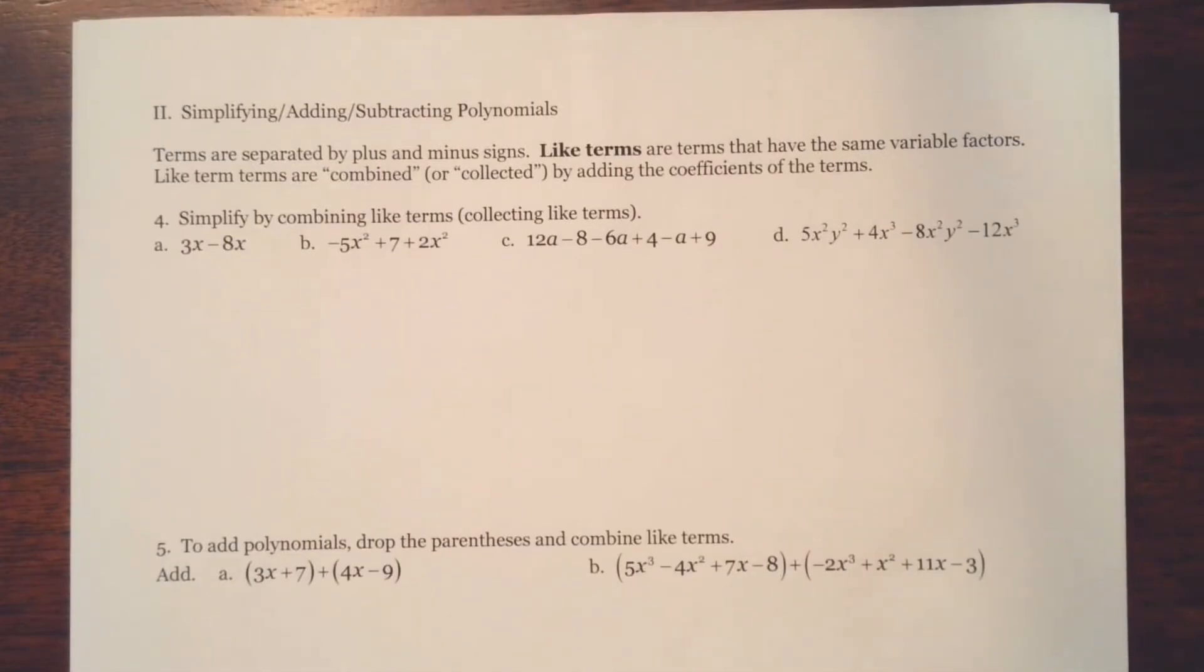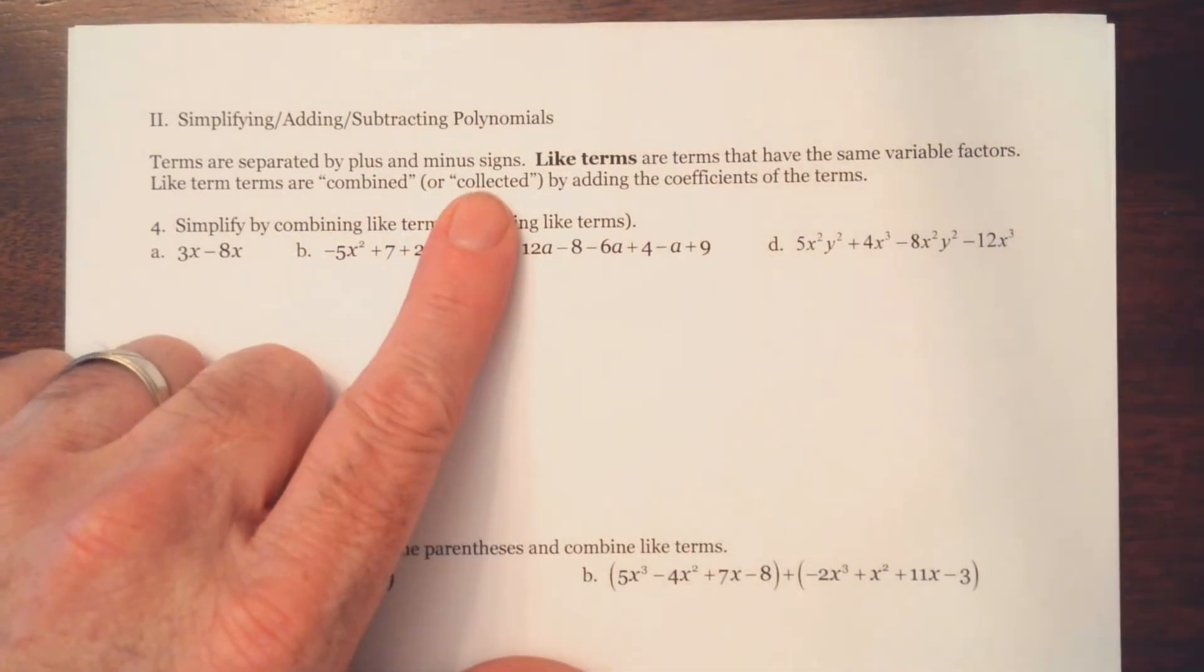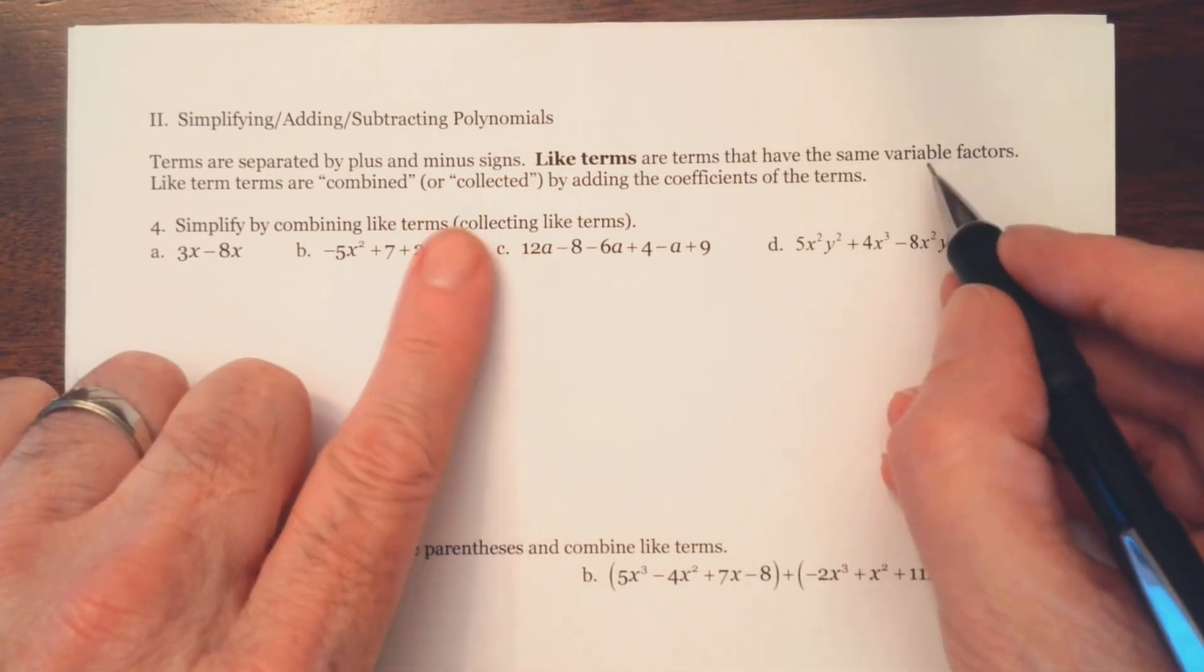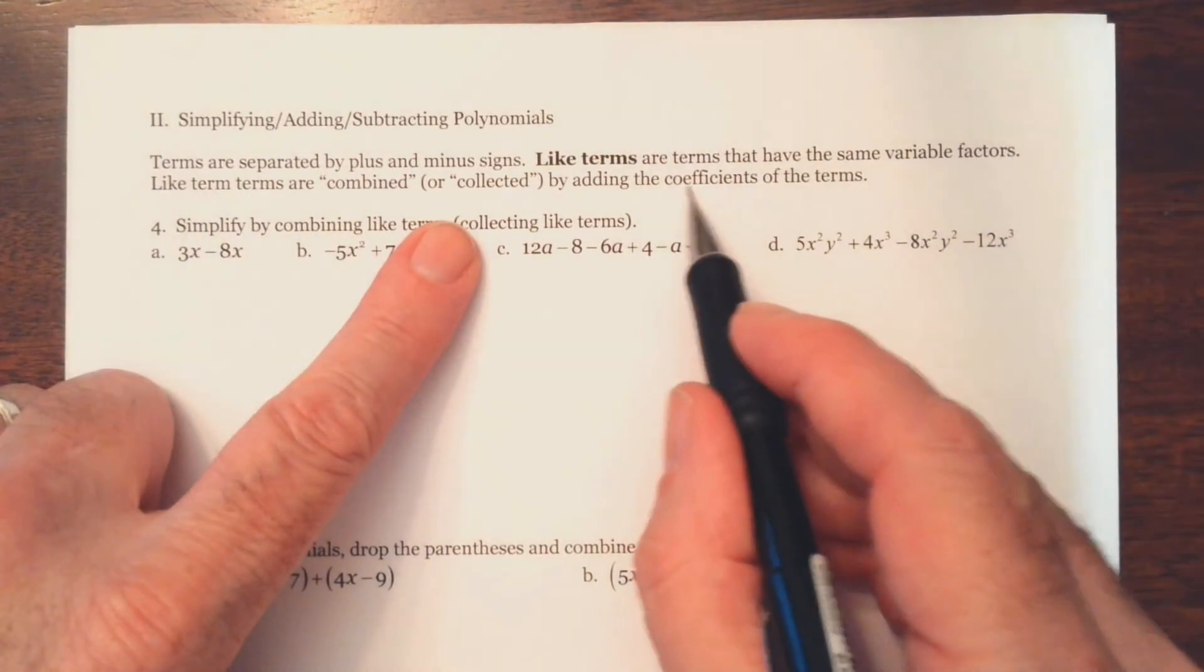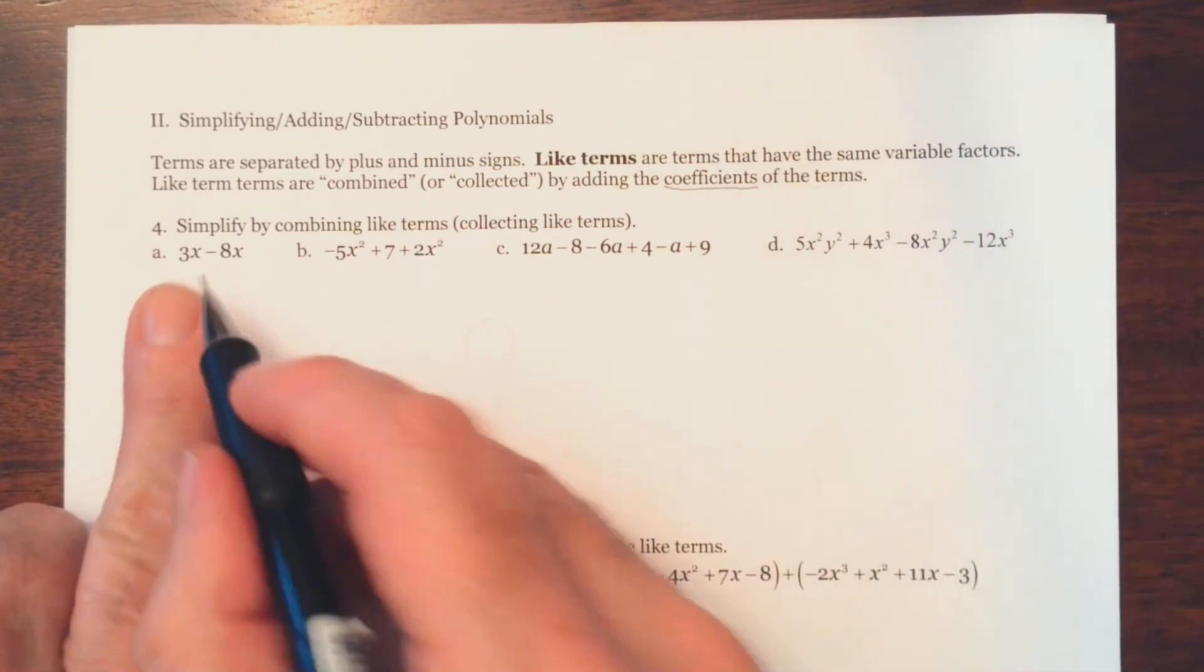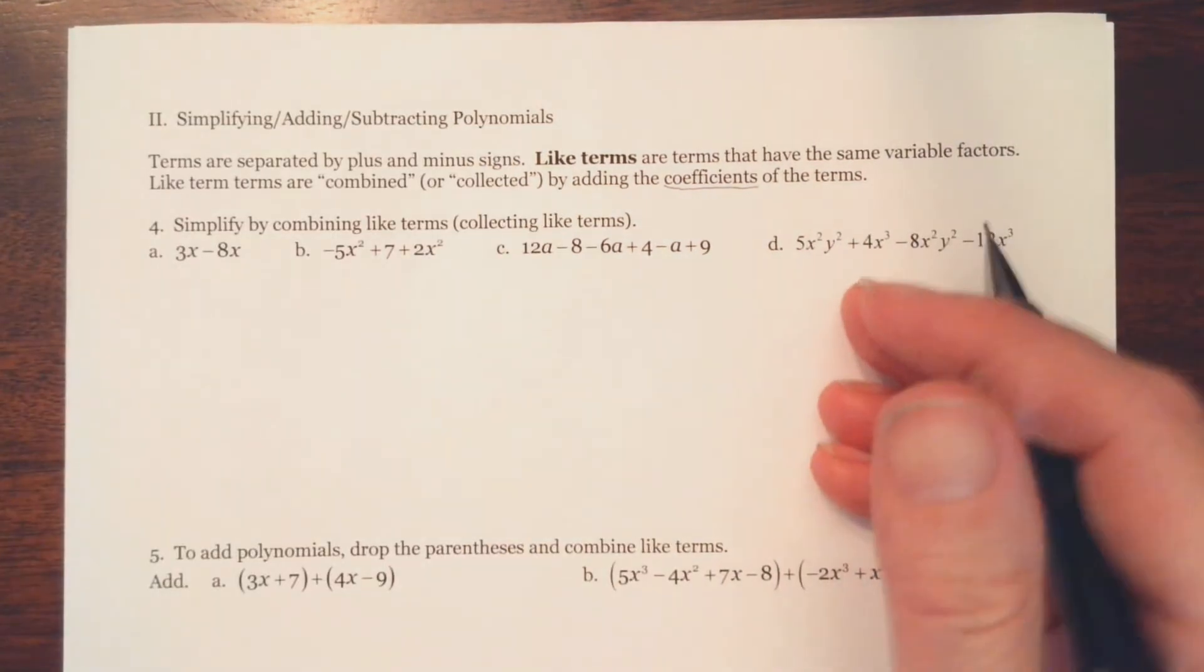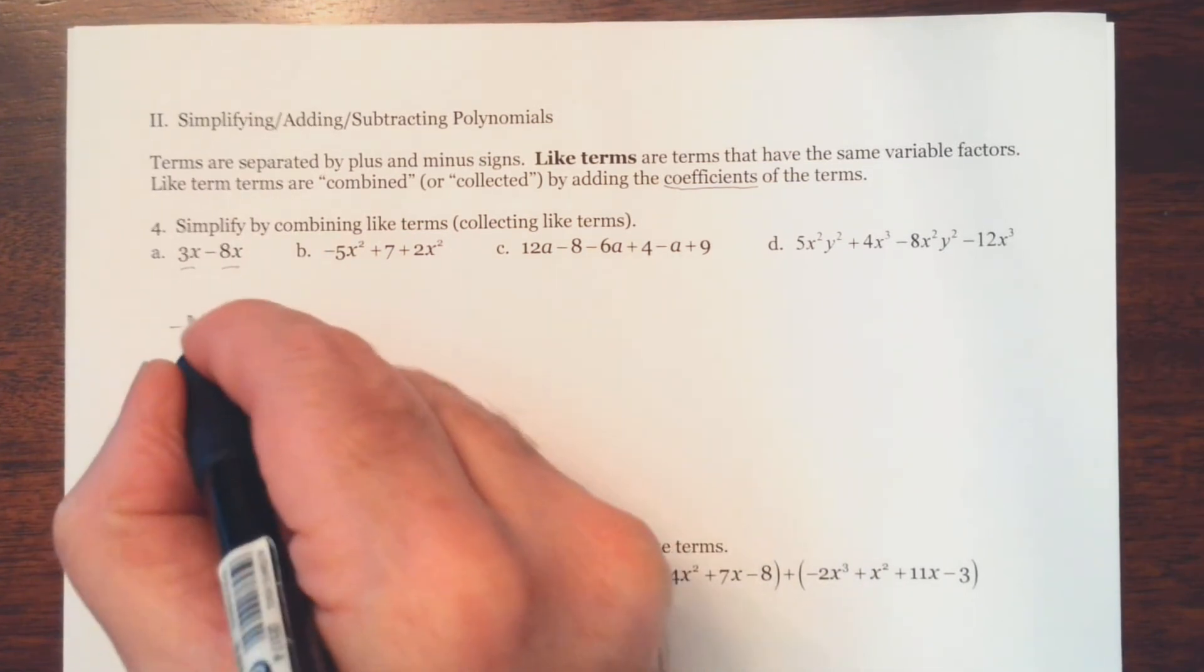Alright, so let's move on to the next page, the last page. So, next we're going to look at simplifying, adding, subtracting polynomials. Terms are separated by plus and minus signs, we talked about that before. Like terms are terms that have the same variable factors. Basically, the same variables to the same power. Like terms are combined or collected by adding the coefficients of the terms. The coefficient is just the number out front. So here, the coefficient of this term is the 3. Alright, so we're just adding 3 and negative 8 here to combine these two like terms. That's negative 5x.